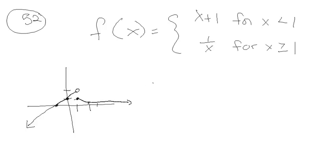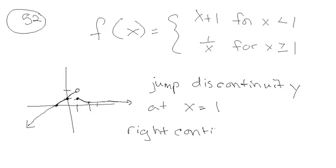So we have a jump discontinuity at x equals 1, and we actually do approach, if we approach 1 from the right, we get the function value of 1. So we can say that it is right continuous at x equals 1.